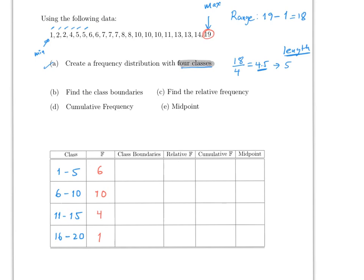Class boundaries are pretty easy. For the first class, which goes from 1 to 5, you subtract 0.5 from the lower end and add 0.5 to the upper end — extending or stretching the class. So 1 minus 0.5 gives 0.5, and 5 plus 0.5 gives 5.5. The next boundary goes from 5.5 to 10.5, then 10.5 to 15.5, and finally 15.5 to 20.5. You can check correctness by confirming adjacent boundaries match.